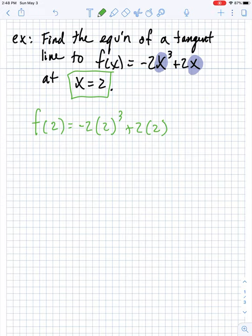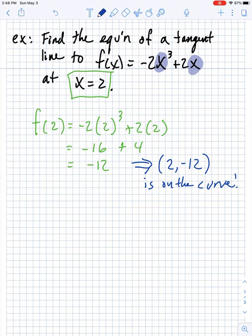Haven't done a derivative. I'm just figuring out what the y value is going to be associated with the 2 on the curve. Crunch this out. Let me see. 2 cubed is 8. Negative 2 times 8 is negative 16 plus 4, which is negative 12. So what this means is that 2, negative 12, is on the curve. But also, that's the point that the tangent is going to go through. So that's the point that's on the tangent and the curve.